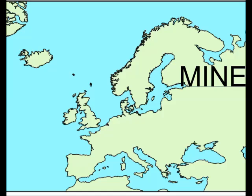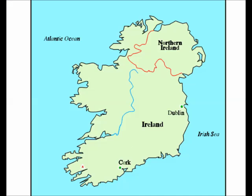The Irish Sea is between Great Britain and the Republic of Ireland. It is situated between the two masses of Wales and Ireland.